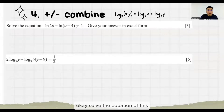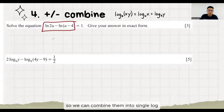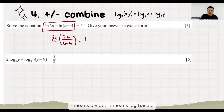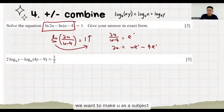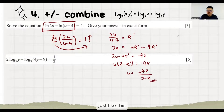Solve the equation and give your answer in exact form. Both sides are in LN form. It's a plus or minus situation, so we can combine them into a single log. Minus means divide. LN means log base E. So E we throw here and then this thing goes up. We want to make U as a subject, so we group all the U together.